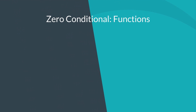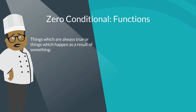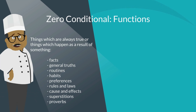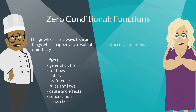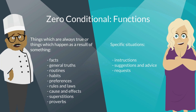So in summary, we use the zero conditional to talk about things which are always true, or things which always happen as a result of something else. This includes facts, general truths, routines, habits, preferences, rules and laws, causes and effects, superstitions and proverbs. We can also use the zero conditional for specific situations such as giving instructions, offering suggestions and advice, and making requests.